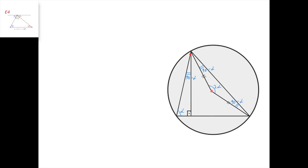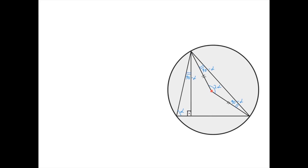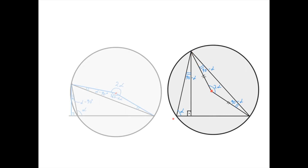Also, from the sum of the angles in this triangle, if this angle is alpha and this is 90, then this is 90 minus alpha. And therefore this angle equals this angle, which means that this line and this line are isogonal conjugates in this triangle.